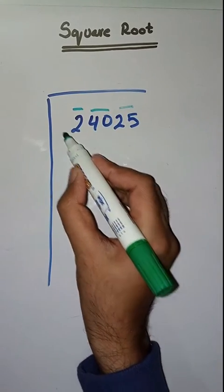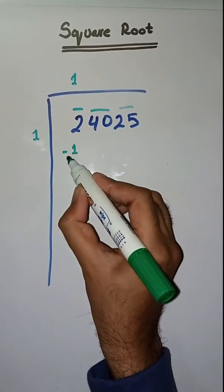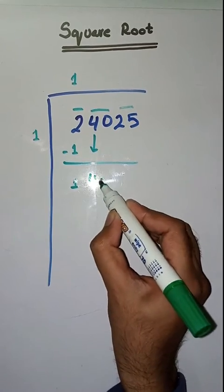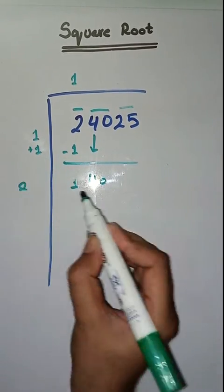First we have to solve for number 1. 1 times 1 is 1. Minus, we do 1. Next, we take 40. We will take 1 plus 1, which is equal to 2.